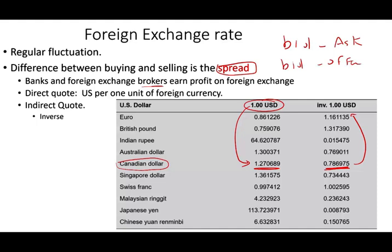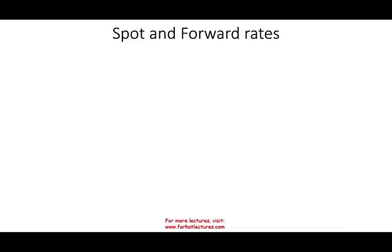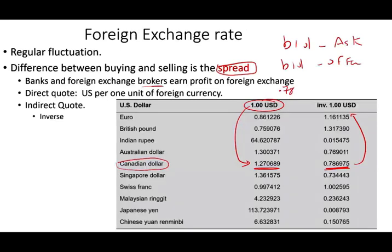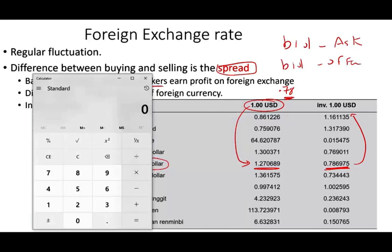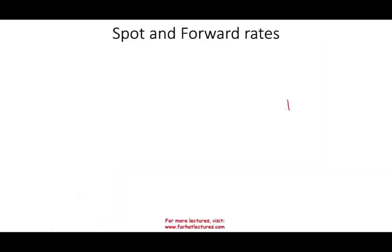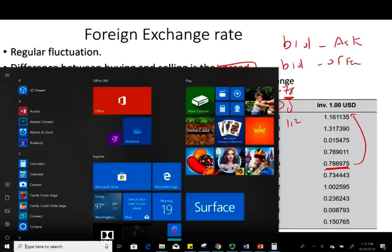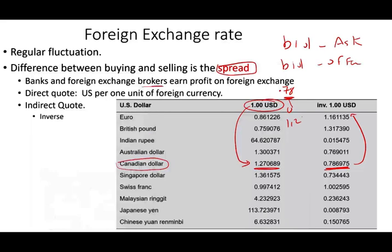If you go to the bank and say you want to convert $1,000 US dollars into Canadian money, you are buying Canadian dollars. They might say the bid is 0.78. That means for every Canadian dollar, you pay $0.78. So $1,000 divided by 0.78 gives you approximately $1,282 Canadian dollars. That's the bid — the rate at which the bank sells you the foreign currency.